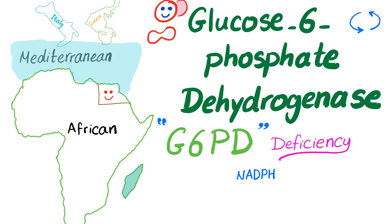G6PD deficiency is the most common enzymatic deficiency worldwide. It has two variants: a Mediterranean variant in North Africa, Italy, and Greece, as well as an African variant in sub-Saharan Africa. Which one is worse? The Mediterranean. And I'm a proud Egyptian. G6PD deficiency is very common in my home country, and now you will see how an Egyptian guy will explain a disease prevalent in his own country.